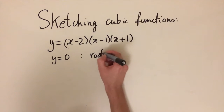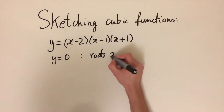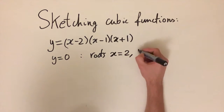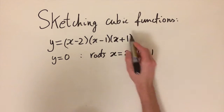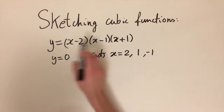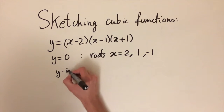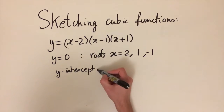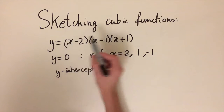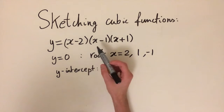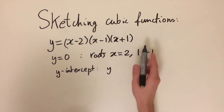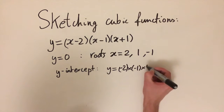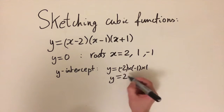From setting each bracket to zero, we find that the roots are x equals two from the first bracket, x equals one from the middle bracket, and x equals minus one from the last bracket. We can also work out the y-intercept by substituting x equals zero, which gives us all the constant terms multiplied together: y equals minus two times minus one times one, which equals two. So the y-intercept is two.